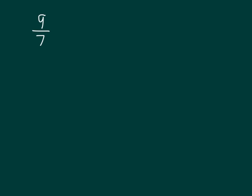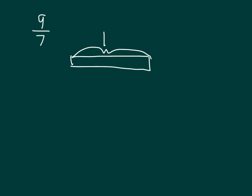Let's try another problem. Here we have nine-sevenths. Let's draw and shade a tape diagram of that given fraction. Nine-sevenths is more than one, so I'll start with one and divide it into seven parts. If I start shading these in, how many sevenths do I have? Seven-sevenths equals one. How many more sevenths do I need? It looks like I need the eighth and ninth, so that I have nine-sevenths modeled.